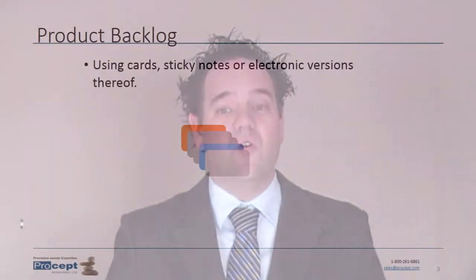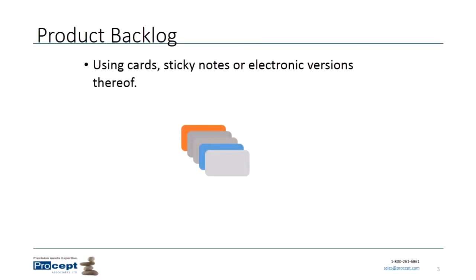In contrast with this, the product backlog is a completely different approach to handling and documenting our requirements. Our requirements are actually going to be documented on cards, stickies, or electronic versions thereof. I'm going to use the term backlog item for the rest of this video, but it could be that physical card, a sticky, or an electronic representation — that is what a backlog item is going to be.